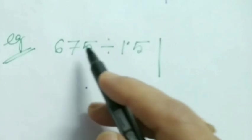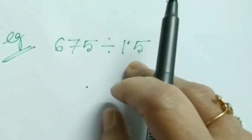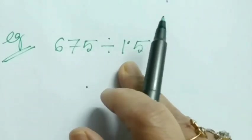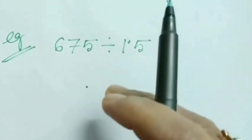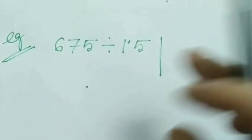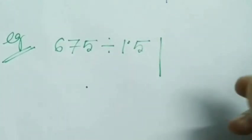For example, 675 divided by 1.5. Here the divisor is 1.5, which is our decimal number, and 675 is a whole number. Dividing by a decimal number will be very difficult - it's easier to use tables of a natural number. So we'll convert this decimal number into a natural number by removing the point.